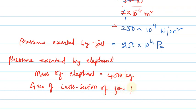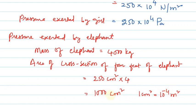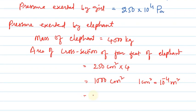Area of 4 feet equals 250 into 4 centimeter square, and converting to meter square: 250 into 4 into 10 to the power of minus 4 meter square, which can be written as 1000 into 10 to the power of minus 4 meter square.